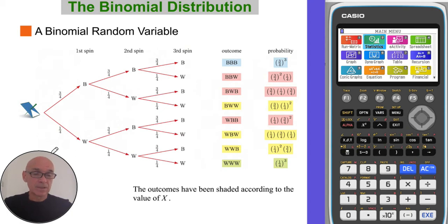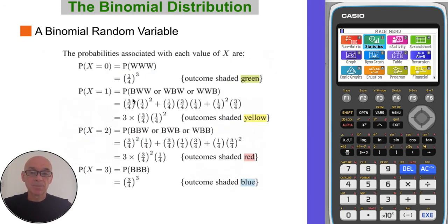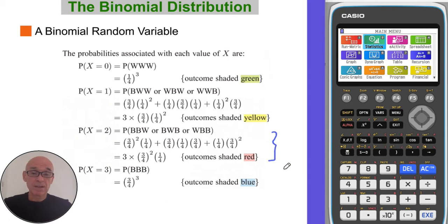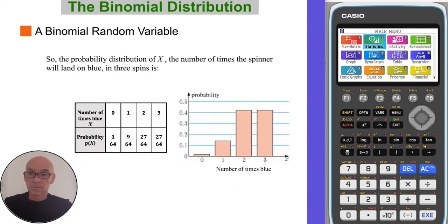The associated probabilities are also shown. The probability that X equals zero — the green shaded branch — is one quarter cubed, which is 1/64. The probability that X equals one is the sum of the three yellow branches. The probability that X equals two corresponds to the three red results. Working out those probabilities gives 1/64 for X equals zero, 9/64 for X equals one, 27/64 for X equals two, and 27/64 for X equals three. The results are also shown in the bar chart to the right.